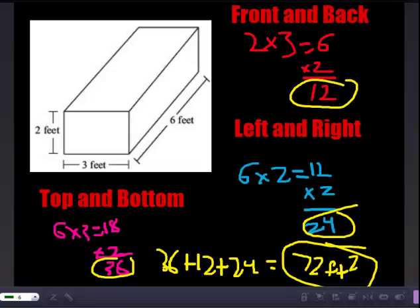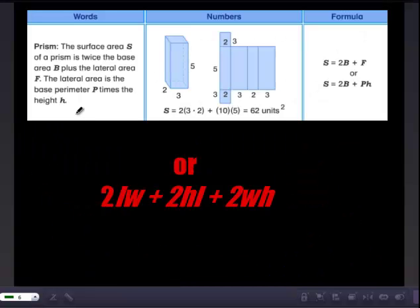Another way to look at this, and the book shows you this way, is, and this might be more confusing, but a prism, the surface area S of a prism is twice the base, the base being the bottom piece again, and the lateral surface area. The lateral surface area is, if you unravel it, the bases are the top and the bottom, so the lateral is everything in the middle.